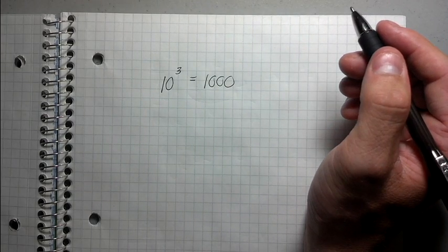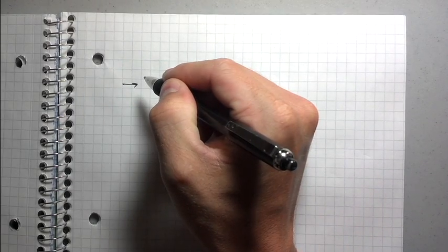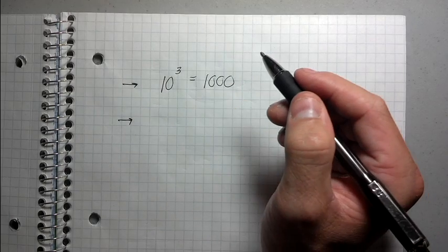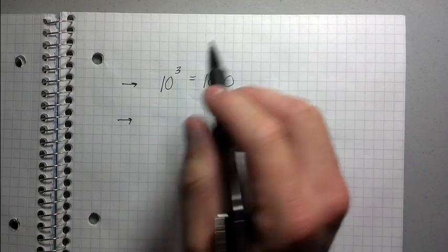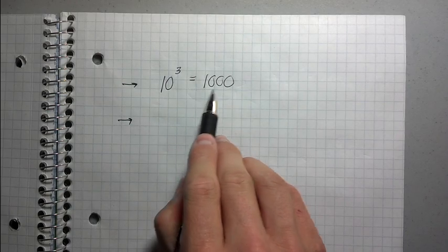So, a logarithm, so keep this in mind, this is an exponent. A logarithm is basically the inverse of an exponent. What it's saying is instead of 10 raised to the third power being 1,000...